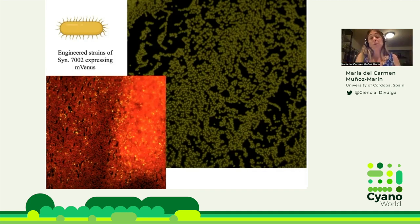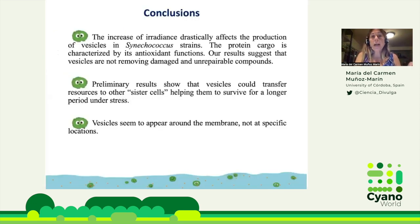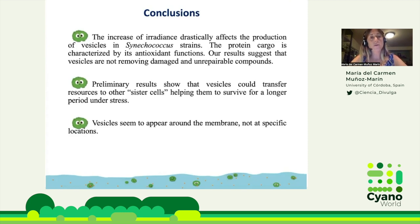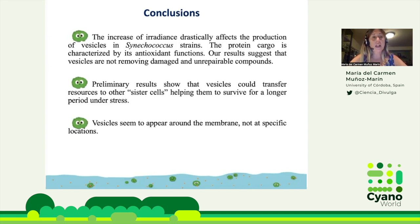To conclude the vesicles section: increased irradiance drastically affects vesicle production in Synechococcus strains; the protein cargo is characterized by antioxidant function; and our results suggest vesicles are not removing damaged or unrepairable compounds. Preliminary results show vesicles could transfer resources to sister cells, helping them survive longer under stress. Vesicles appear to form around the membrane, not at a specific location.